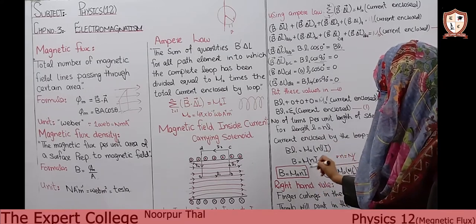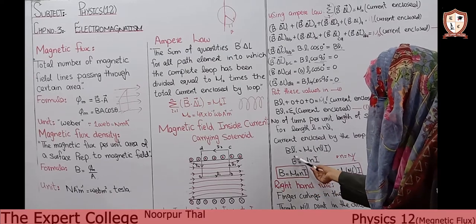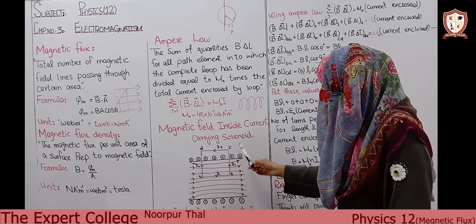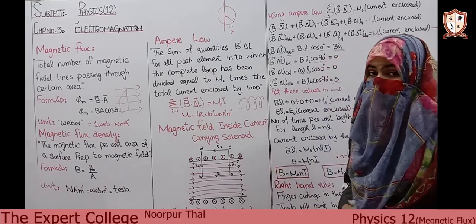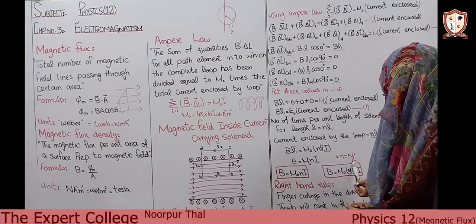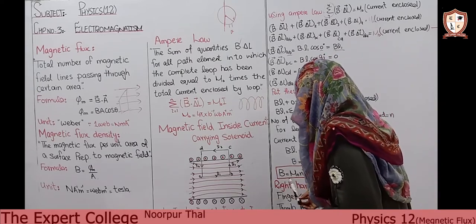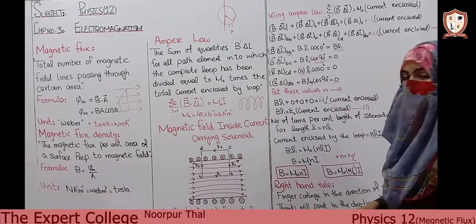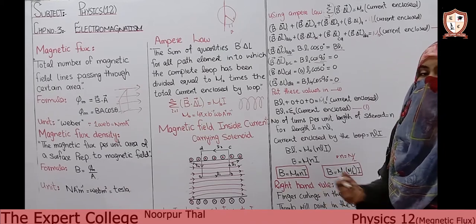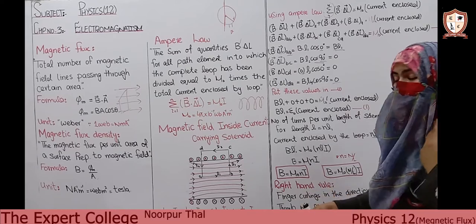Substituting: B·L1 = μ₀ · n · L1 · I. Cancelling L1 from both sides, we get B = μ₀ · n · I. This is the magnetic field inside a current-carrying solenoid. Here n = N/L, where N is the total number of turns and L is the length of the solenoid. So the final result is B = μ₀ · (N/L) · I.